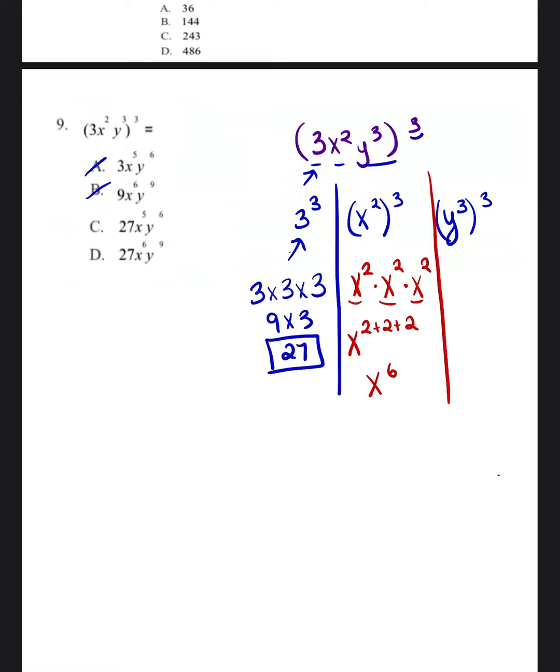So it would be x to the sixth power. Okay, and then we're going to go to this last part, y to the third power. And then it's all also going to be to the third power. So we're doing y cubed times y cubed times y cubed. Again, they all have the same base as y. So you just add the exponents, 3 plus 3 plus 3. So it will be y to the 3, 6, 9 power.